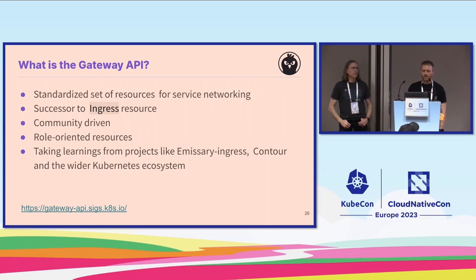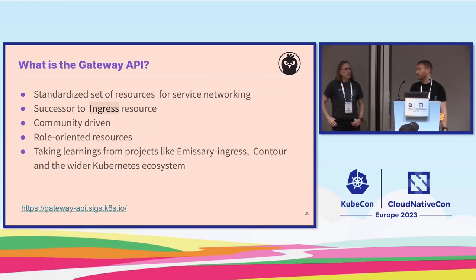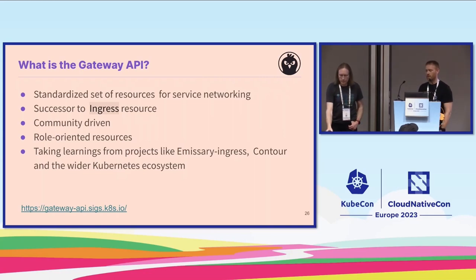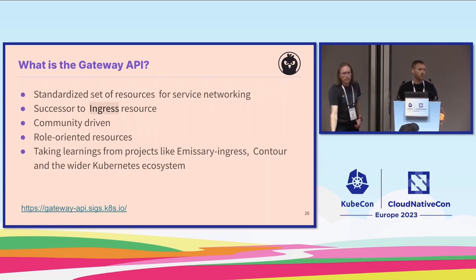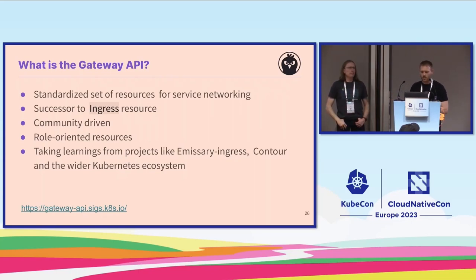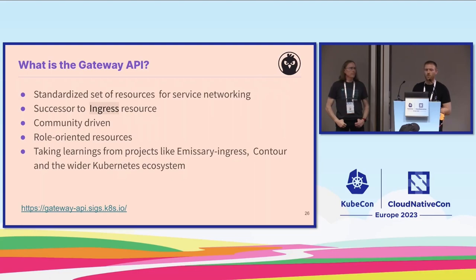The Gateway API is a standard set of resources for service networking. You can think of it as the successor to the Ingress resource, and it's community-driven — that's really important. It's drawing on experience from many projects and taking all the lessons learned. Similar to Emissary's self-service, developer-centric approach, the Gateway API is role-oriented, looking at that trust between developers and platform operators. It's been taking learnings from projects like ours, Contour, and the wider Kubernetes ecosystem.